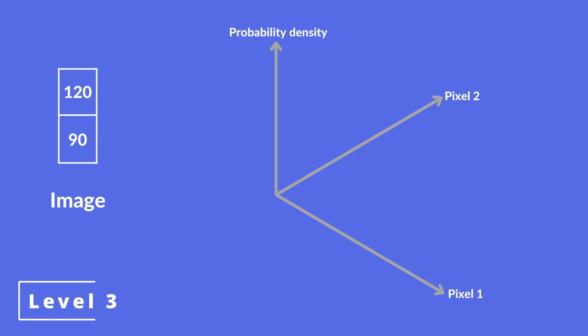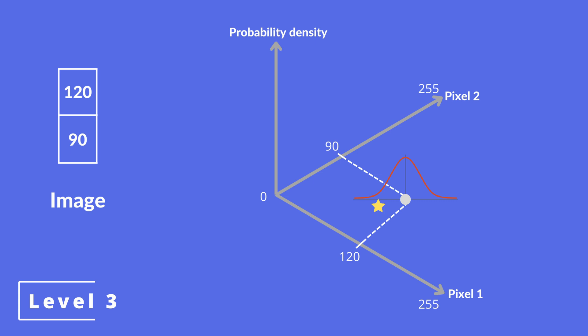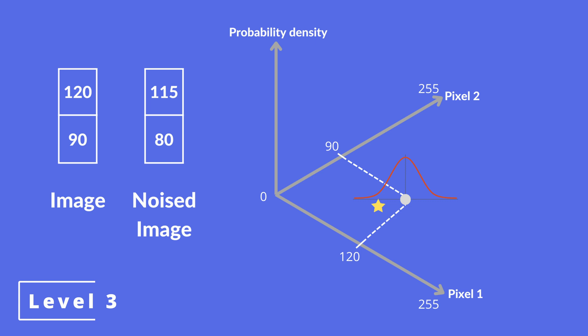Let's look at an example. For simplicity, let's say we have a two-pixel image. The X-axis shows us the value of pixel 1, the Y-axis shows us the value of pixel 2, and the Z-axis gives us the probability distribution. If the values of our original image's pixels are 120 and 90 out of 0 to 255, our image will live at this point. To apply Gaussian noise, we draw the Gaussian probability distribution where the mean is, and the variance is determined by a constant — let's say 10. To add noise, we select a random position inside this distribution. It could be really close to the original point, really far, or somewhere in between. The probability distribution tells us that the new point being closer to the original point is more likely than it being further away. So if this point is selected randomly, the image in the next step of our Markov chain will look like this, and we will have effectively added Gaussian noise to our image.